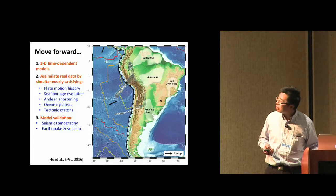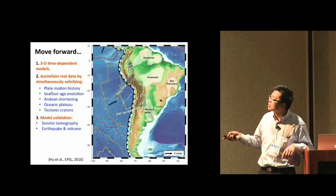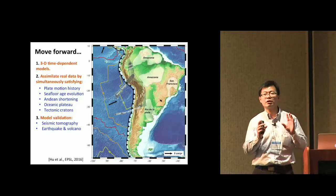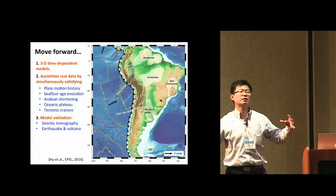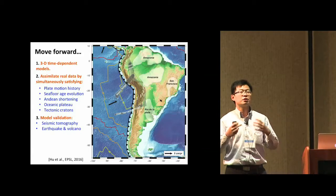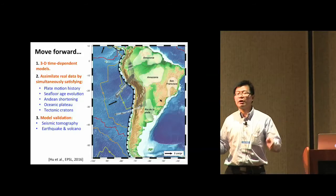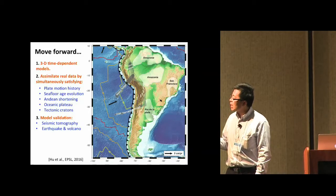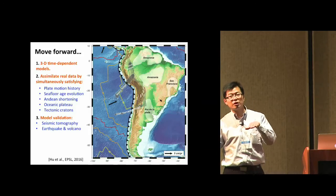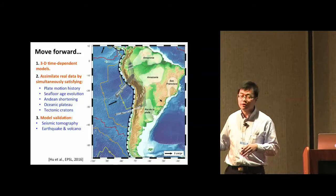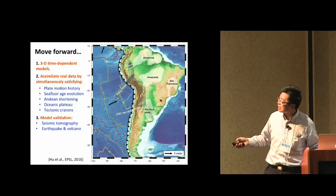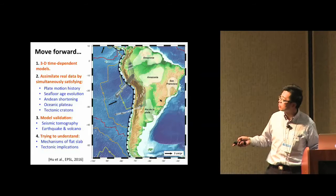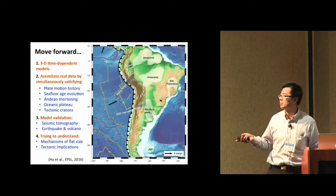With this kind of model and input, we still need to validate the model using observations such as seismic tomography. Similar to medical tomography, earthquake waves let you see through the Earth's interior — the 3D geometry as it exists today. We also use the distribution of earthquakes within the Earth and volcanoes at the surface, all of which tell us about the present-day configuration that we use to validate the model.